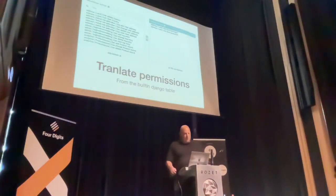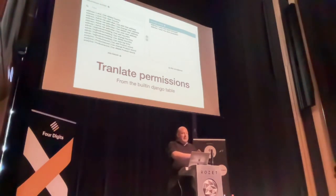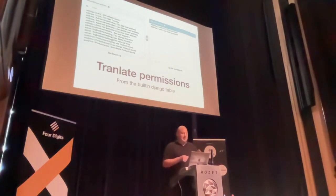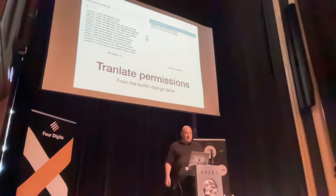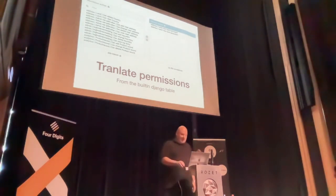Here you can see what happens with the permission. On the left side you can see 'address', 'land', and 'can delete country' — the model is translated, and on the third line it says 'adres van gebruiker', which is Dutch, but 'can add user address' is still in English. On the right side, I've translated the name field of the permission, so it now says 'address', 'land', 'kan land toevoegen'. This is code that lives in Django and I could still translate it, with my migrations stored in my project.